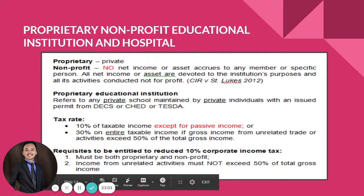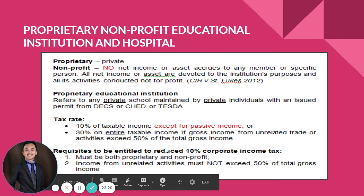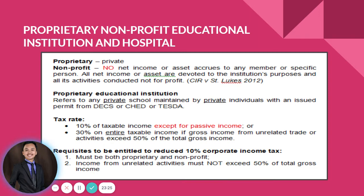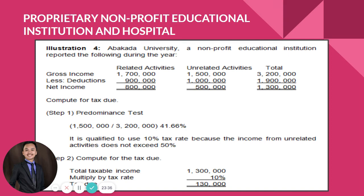Unrelated trade, business, or activity means any trade, business, or activity whose conduct is not substantially related to the exercise or performance of the educational institution's or hospital's primary purpose or function. The income from such unrelated activities must not exceed 50 percent of total gross income for the institution to qualify for the 10 percent tax rate.